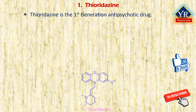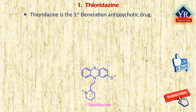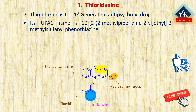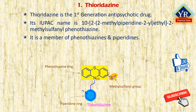Thioridazine is a first generation antipsychotic drug belonging to the phenothiazine class of drugs. Its chemical name is 10-(2-(2-methylpiperidine-2-yl)ethyl)-2-methylsulfonyl phenothiazine. In other words, it is a phenothiazine derivative having a methylsulfonyl substituent at the second position and a 1-methylpiperidine-2-yl ethyl group at the N10 position. It is a member of phenothiazines and a member of piperidines.